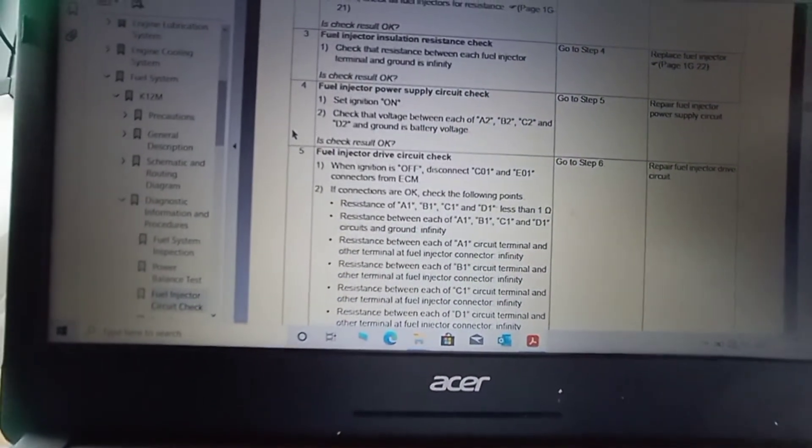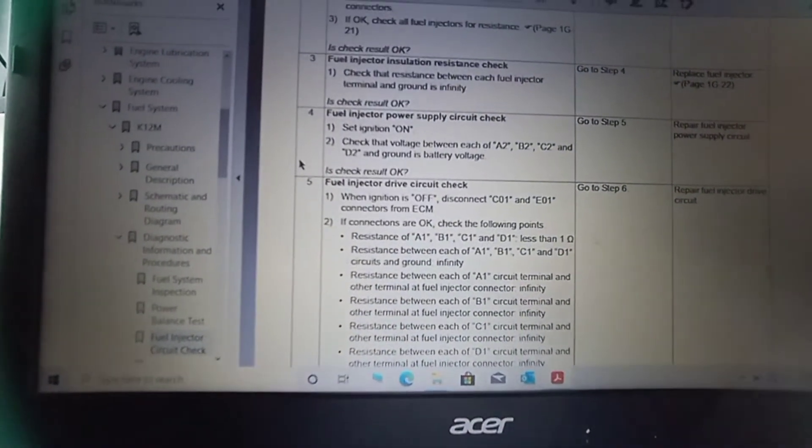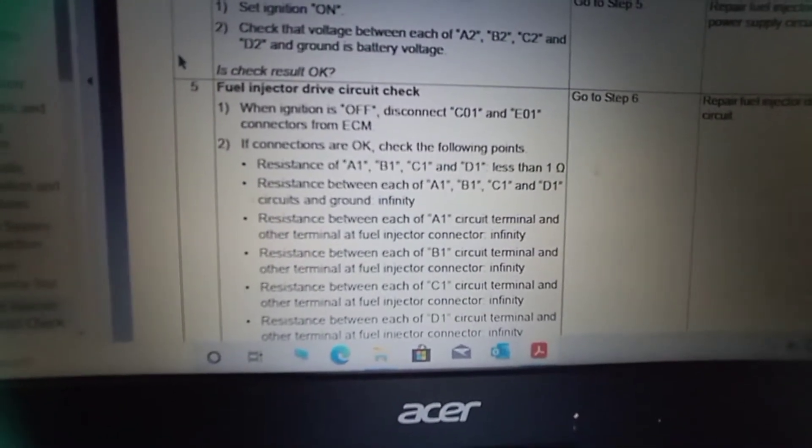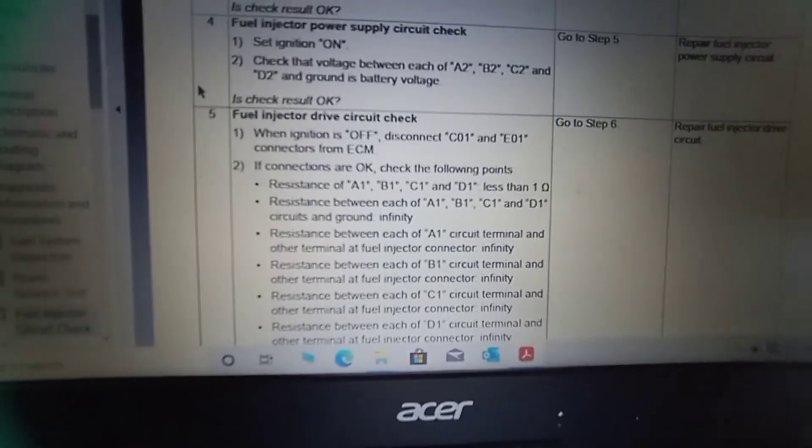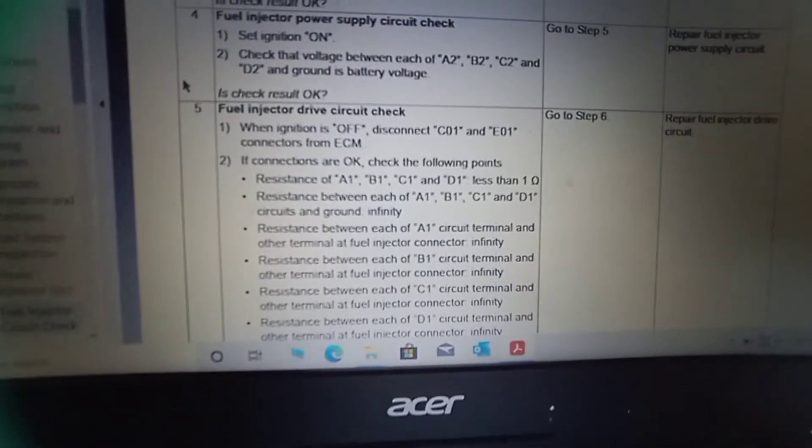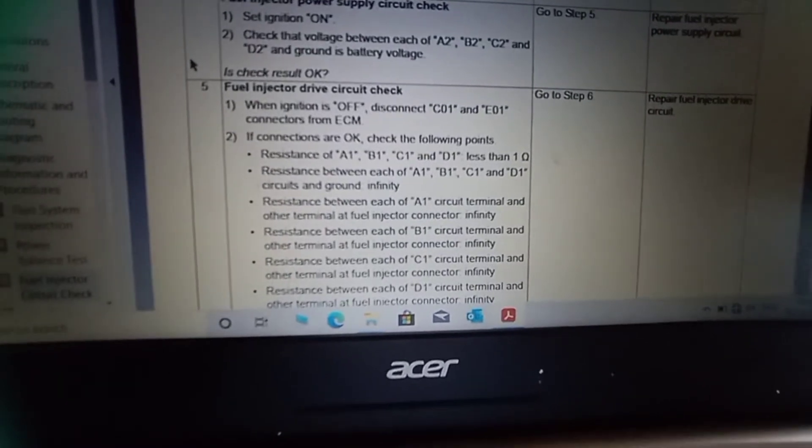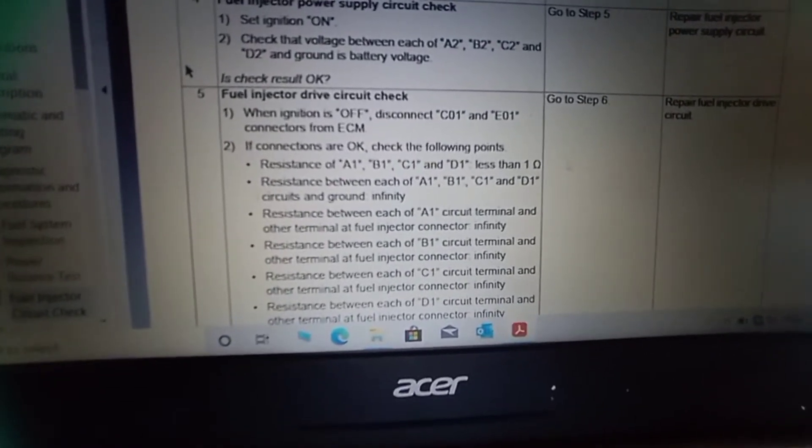Next we will check the fuel injector drive circuit. The ignition is off. Disconnect C01 and E01 connector from ECM. If the connectors connections are OK, check the resistance of A1 circuit less than 1 ohm.